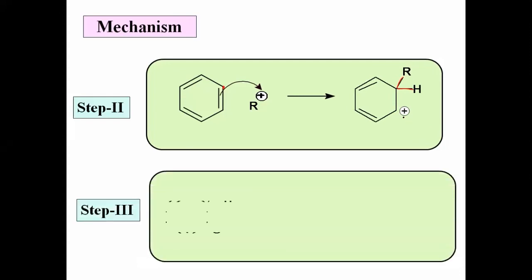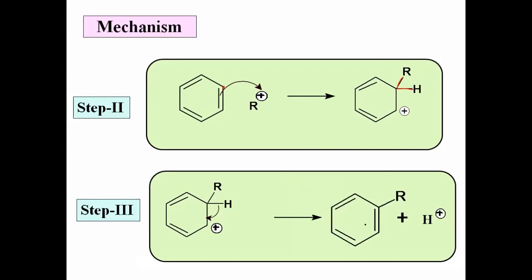The third step is the same for all electrophilic substitutions. The arenium ion intermediate loses a proton: the C–H bond breaks, and the electron pair forms a pi bond between the two aromatic carbons. There is a loss of H⁺ ion, aromaticity is restored, and there is formation of alkyl benzene. Hydrogen from benzene was replaced by an alkyl group — therefore it is called alkylation, specifically Friedel-Crafts Alkylation.